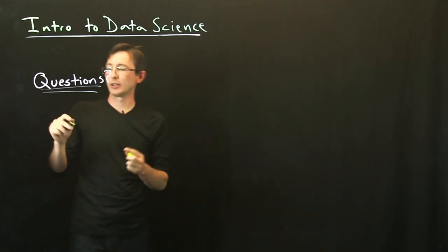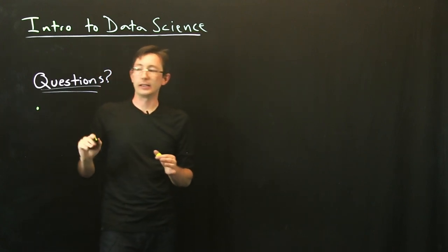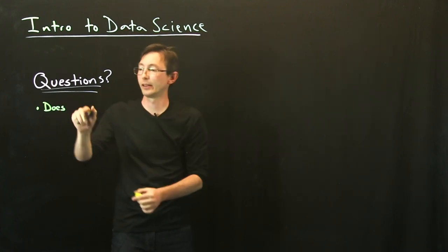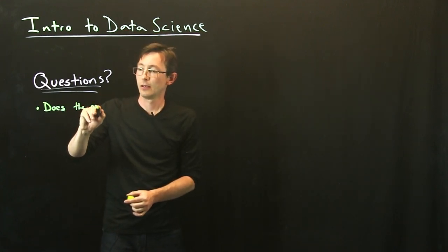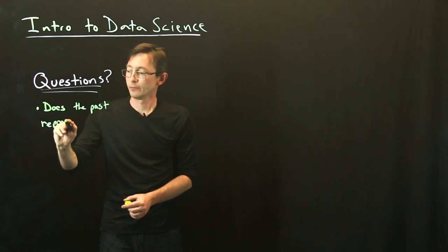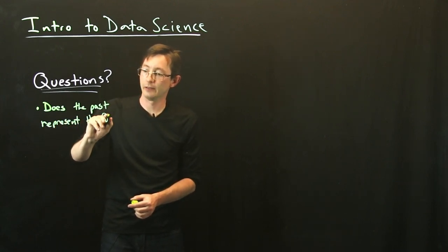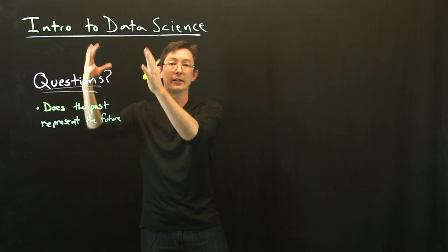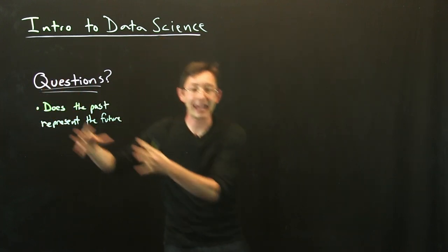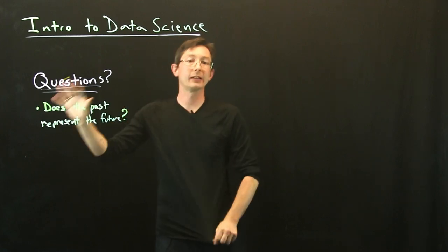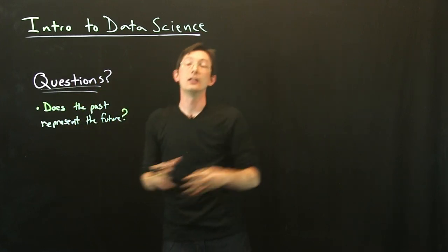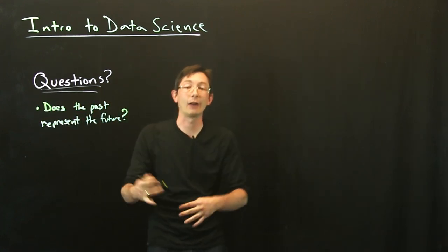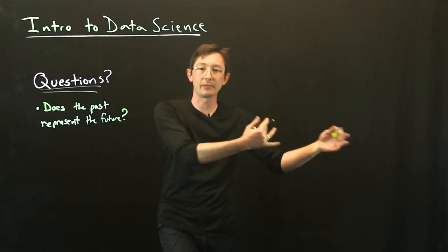And so a major question that I ask all the time in data science is, does the past, so data often is from the past, does the past represent the future? That's a fairly vague statement, but I think you get what I mean. I have historical data often. I've collected a bunch of data. Can it represent the future? How can I use my data to predict the future? Those are the kinds of questions. So does the data I've collected, does it have any bearing on how I want to use my models in the future, the decisions I'm going to make in the future?